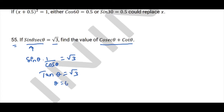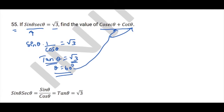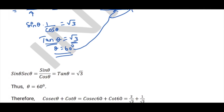Since tanθ = √3, θ = 60°. Substituting into cscθ + cotθ: csc60 + cot60 = 2/√3 + 1/√3 = 3/√3.